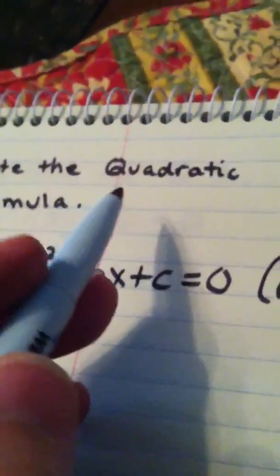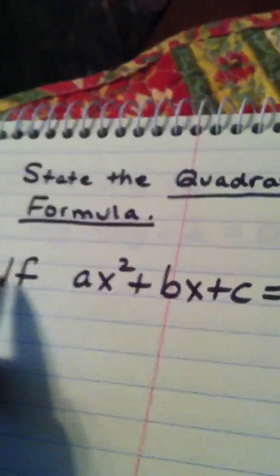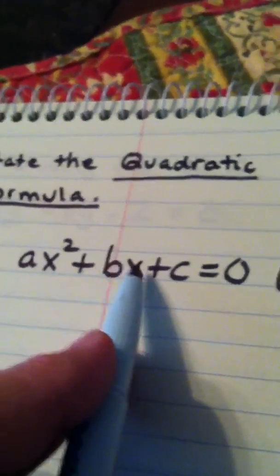So whenever somebody says state the quadratic formula, don't just start writing x equals. You've got to start with the if part. If ax squared plus bx plus c is 0 and a is not 0.